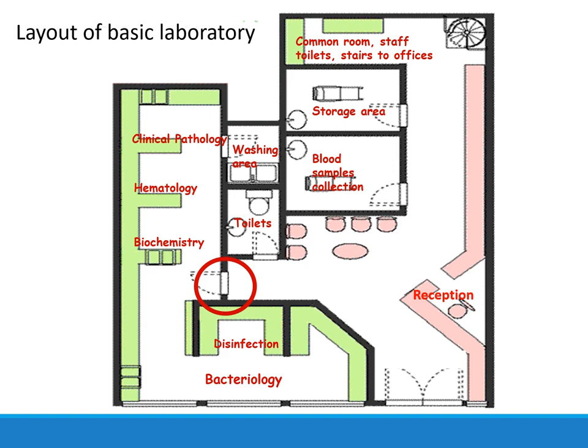This image shows a sample layout of a basic laboratory. The entrance is seen at the lower right-hand side, which leads into a reception, a waiting area, and toilets for patients. From there, patients may go to the adjacent room to get their blood samples collected. Once the sample is collected, it is taken inside to the appropriate section for processing. Within the laboratory there are different sections and areas for washing and disinfection, a separate storage area, staff room and staff toilets, and stairs leading to the office area.